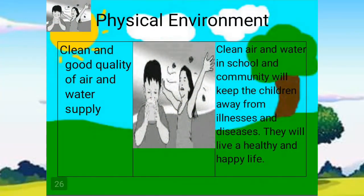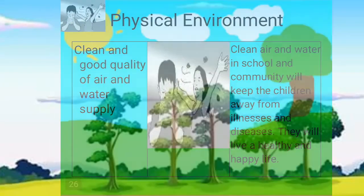Number 2 is clean and good quality of air and water supply. Clean air and water in school and community will keep the children away from illnesses and diseases. They will live a healthy and happy life.